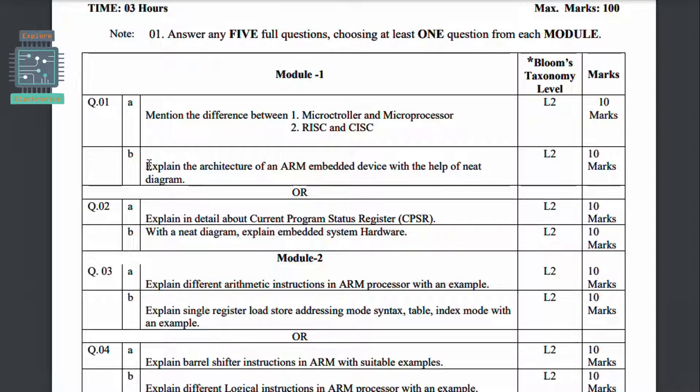So in the first module you can expect the architecture. And you can see here the choice question - we have explained in detail about the current program status register CPSR and with any diagram explain embedded system hardware. These are the questions they have given in model question paper.